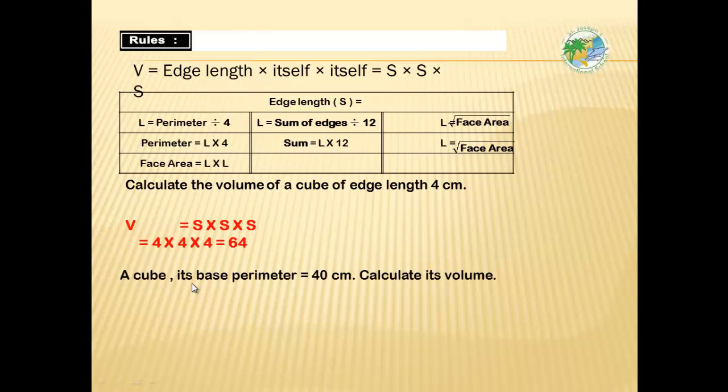A cube, its perimeter or base perimeter equals 40 centimeters. Calculate its volume. Now, we have a perimeter, not edge length. How we can calculate the side length from perimeter? The side length equals perimeter divided by 4. Now, side length equals perimeter divided by 4. 40 divided by 4 equals 10. Volume equals side times side times side. 10 times 10 times 10 equals 1000 centimeter cube.